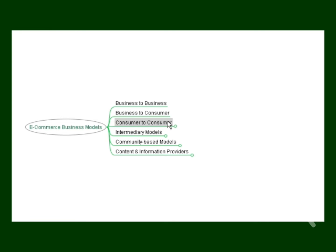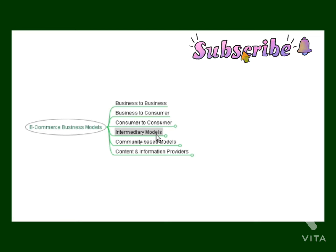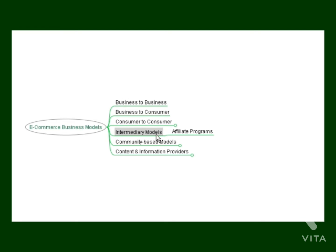Then you've got consumer-to-consumer, and this is generally via online auction sites like eBay. This is where you advertise as a non-incorporated, non-business entity, and start clearing out your garage and listing things for sale to other consumers. Then there's what's known as the intermediary models, which are basically affiliate programs where other vendors pay you a commission to sell their products for them.